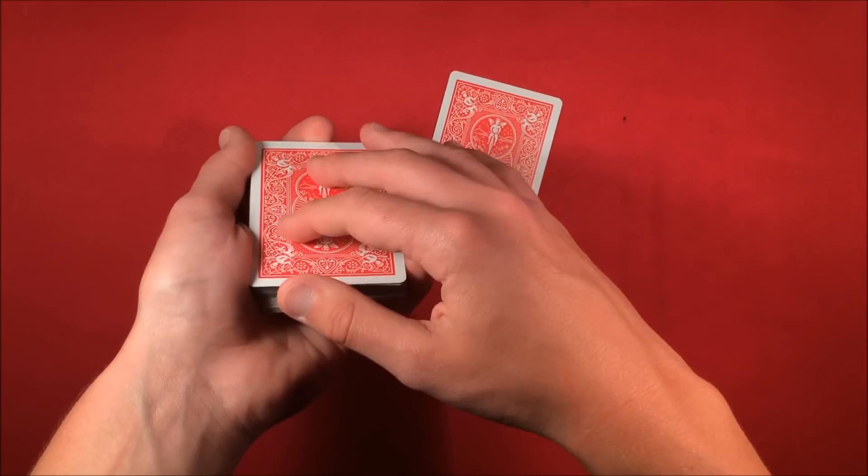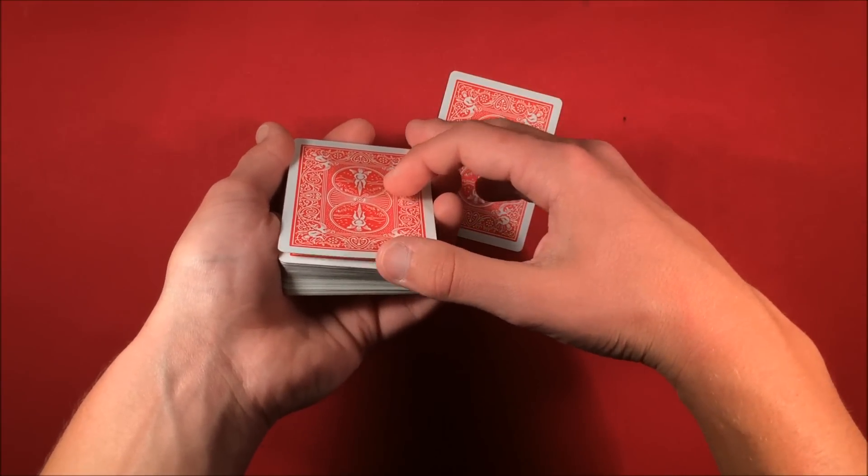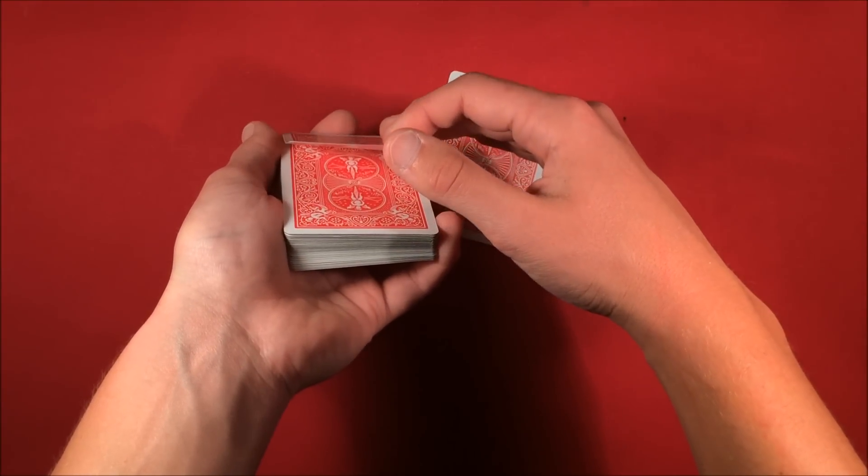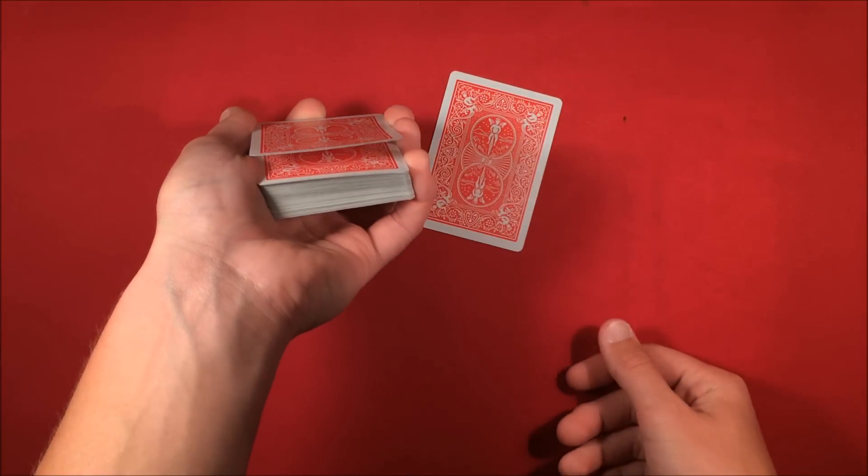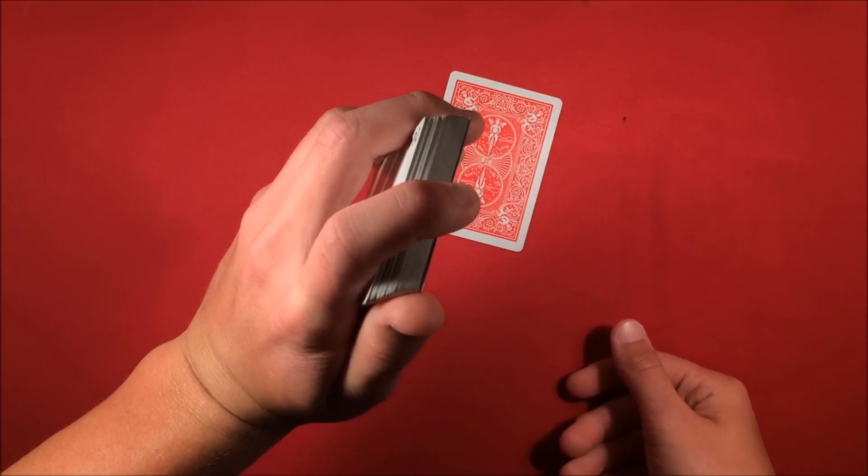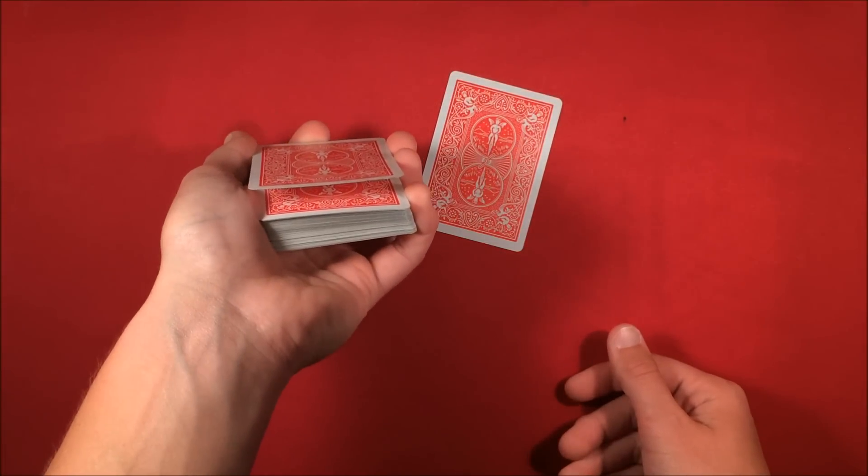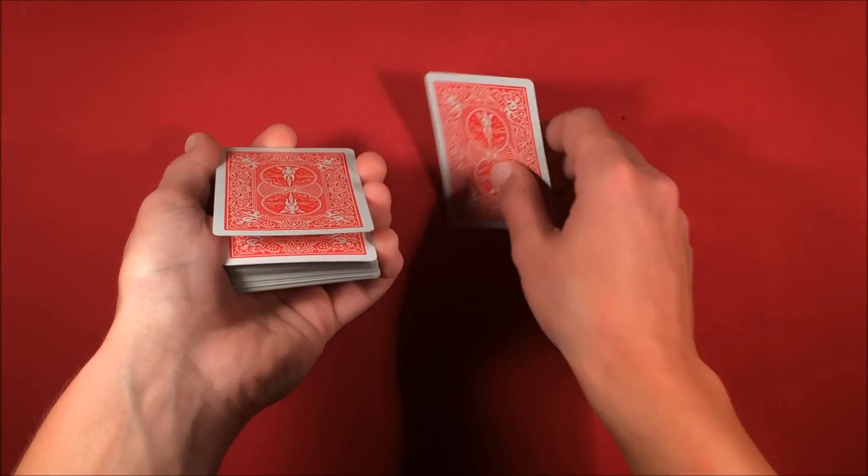And while they're not looking you can just come over with your right hand and you can just pry off the top card like this and set it up nicely like that. And now you have a really perfect break for the Marlo tilt. So you can do this one-handed once you get better at it.